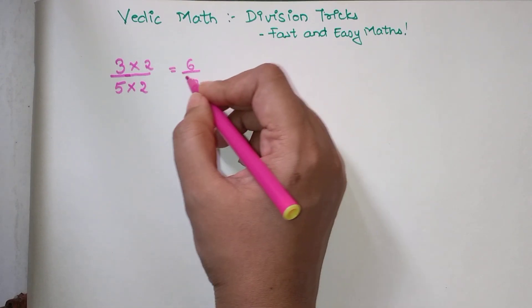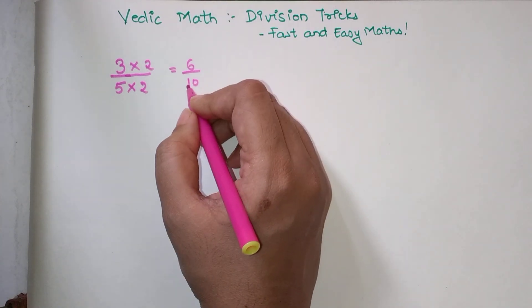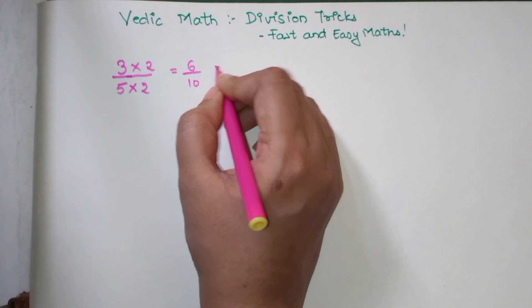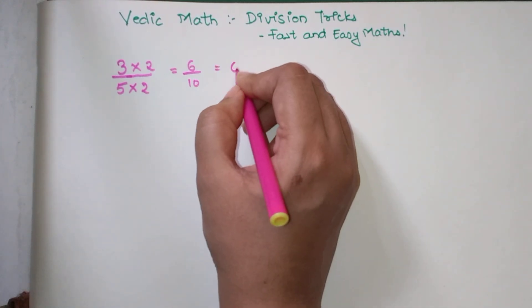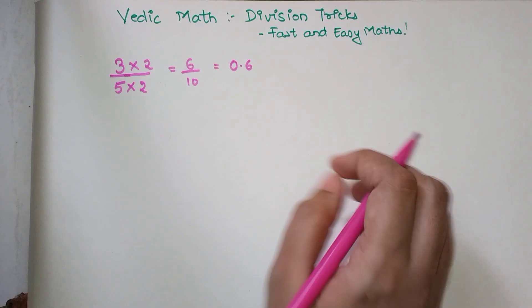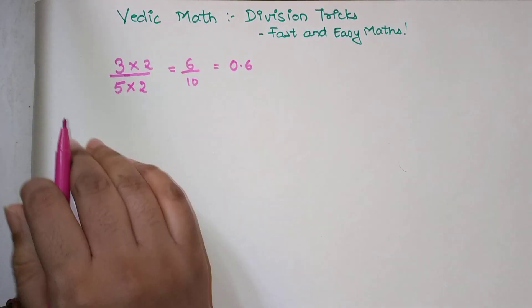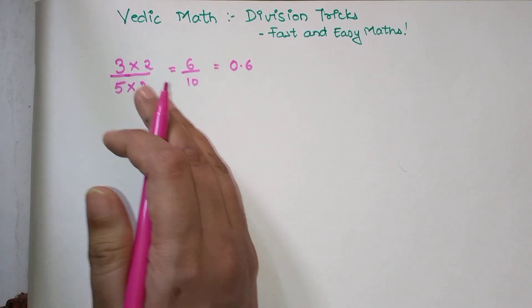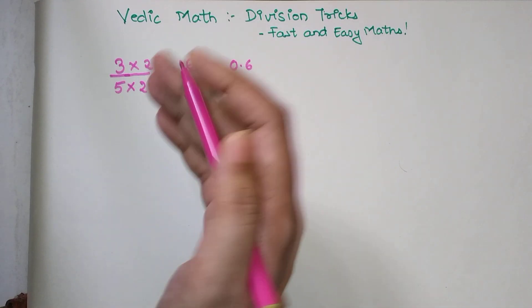My answer becomes 6 upon 10, which converts to 0.6. Converting any fraction with a denominator in terms of 10, 100, or 1000 is very easy. Whenever the denominator is 5, simply double the numerator and divide it by 10.